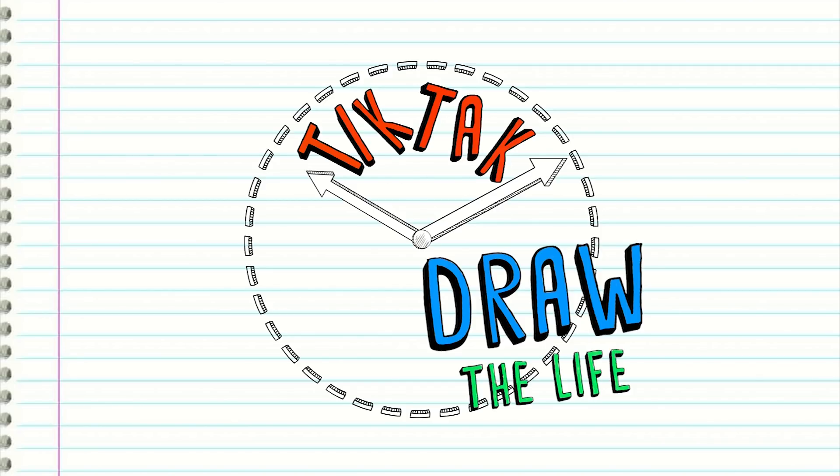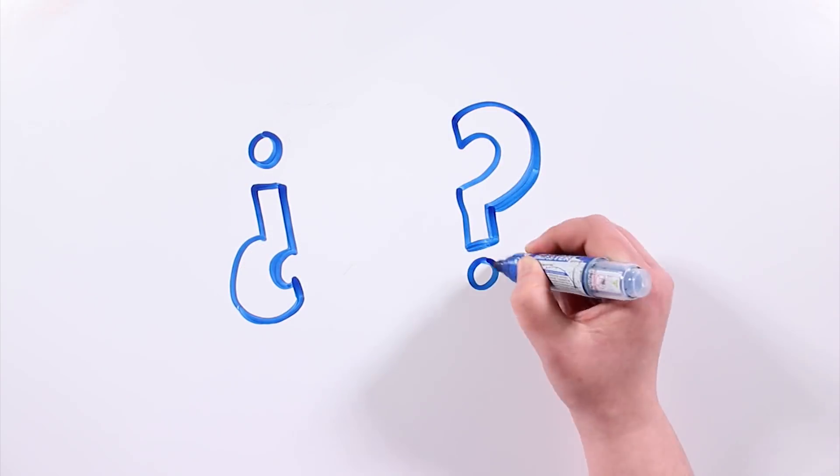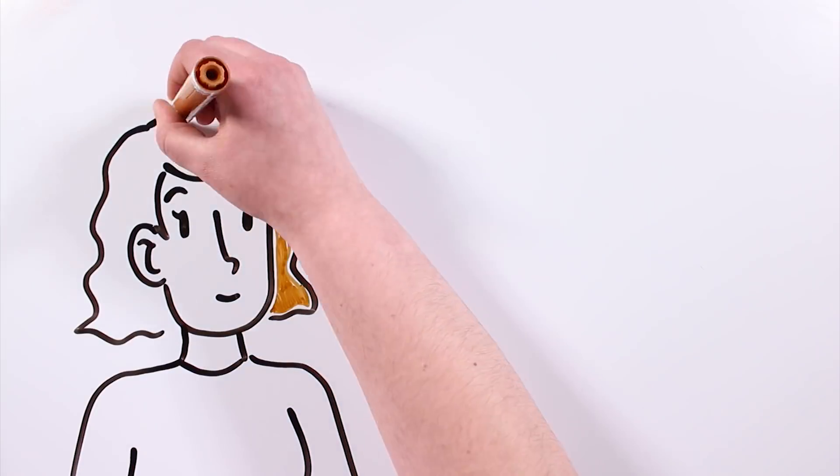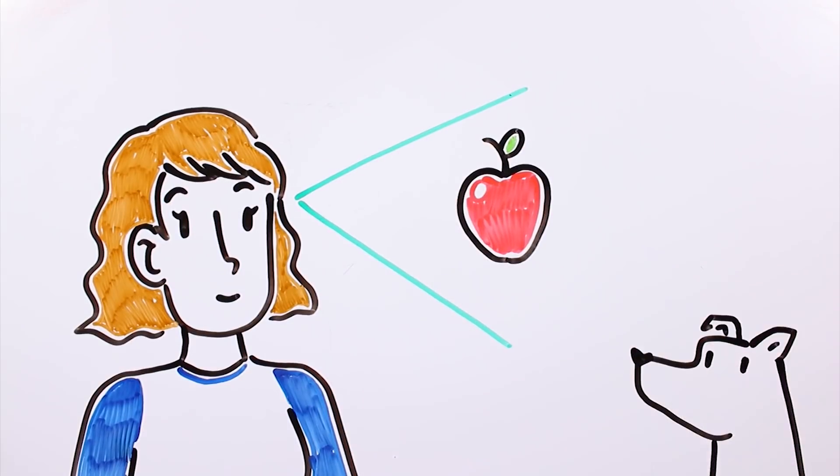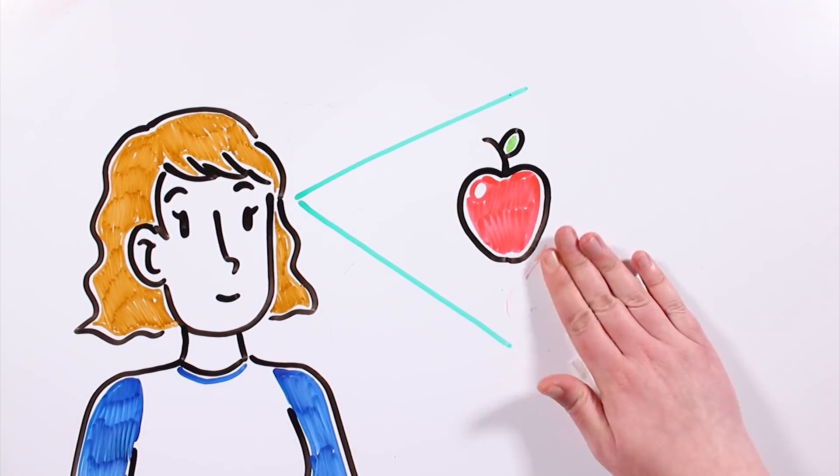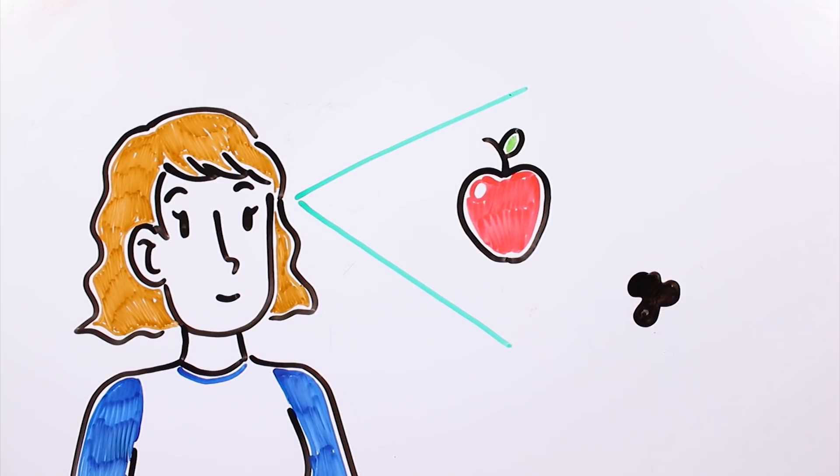Welcome to a new Draw My Life video! How do animals see the world? Humans see the world in a way, but that doesn't mean animals see it in the same way. Each species sees the world in a different way.